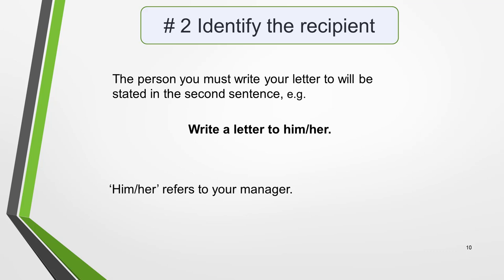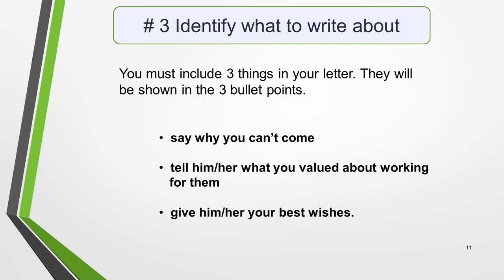Step 2: identify who you are writing to — that is, the recipient of the letter. The person you are required to write your letter to will be stated in the second sentence of the question. In our question, it says 'Write a letter to him or her.' Him or her refers to your manager, so this is who you must write to. Step 3: identify the three things you must write about. You must include three things in your letter, and they will be shown in the three bullet points in the question. Here are the bullet points for our question: 1. Say why you can't come to the party. 2. Tell him or her — that is, your manager — what you valued about working for them. And give them your best wishes. You don't need to write about anything else.